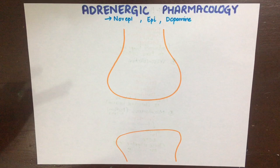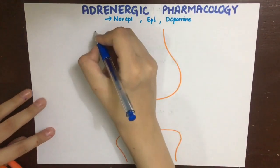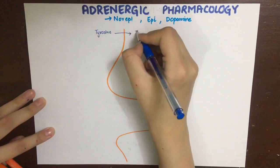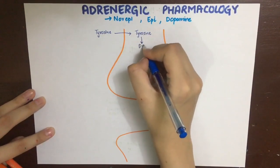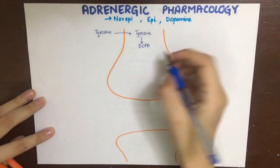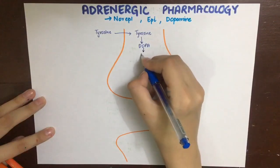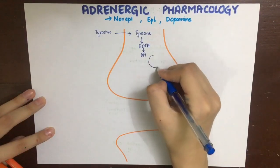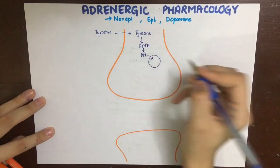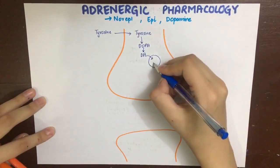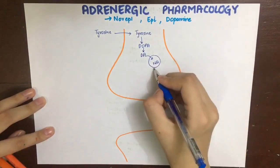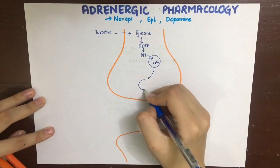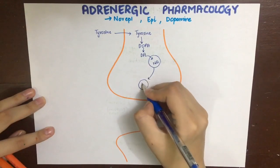First, tyrosine is an amino acid which is actively transported into the nerve terminal. It is then acted upon by the enzyme tyrosine hydroxylase, converting it into DOPA. DOPA is then converted into dopamine, which is taken up into the storage vesicles. Within the storage vesicles, it is converted into norepinephrine.